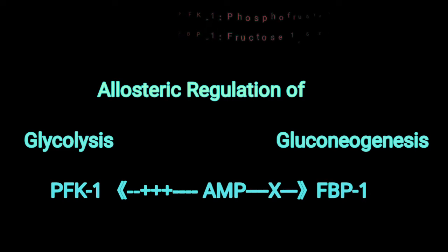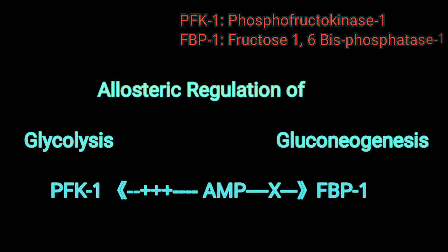The first of such regulators is AMP. AMP is a measure of a low energy status in the cell. High levels of AMP will stimulate glycolysis by allosterically activating phosphofructokinase 1, a key enzyme in glycolysis. Simultaneously, AMP will inhibit fructose 1,6-bisphosphatase, which is the bypass step in gluconeogenesis, and therefore inhibits gluconeogenesis.